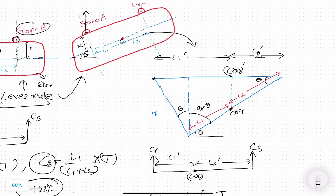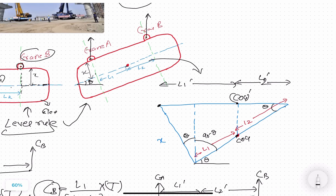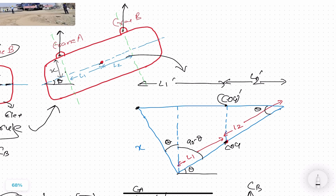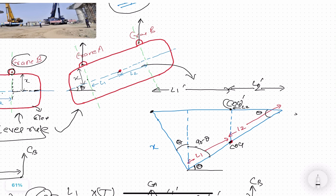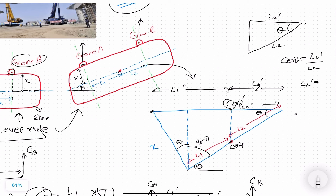Now, how to calculate L1 dash and L2 dash? We use simple geometrical relations. We translate the axis and the angle is theta. Considering the triangle for L2 dash: cosine theta equals base over hypotenuse, where the hypotenuse is L2. So L2 dash equals L2 cosine theta.